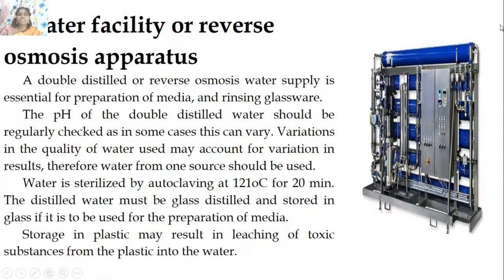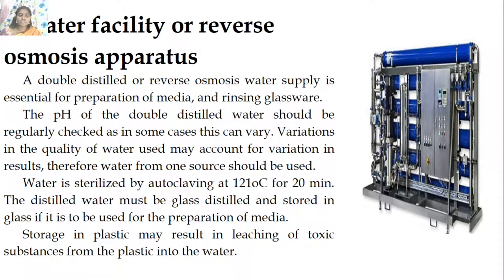Water facility: a double distilled reverse osmosis water supply is essential for preparation of media and rinsing glassware. The pH of the double distilled water should be regularly checked, as variations in water quality can account for variation in results, so water from one source should be used. Water is sterilized by autoclaving at 121 degrees for 20 minutes. Distilled water must be glass-distilled and stored in glass, as storage in plastic may result in leaching of non-toxic substances into the water.